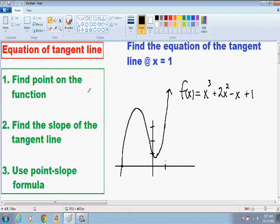Step number one is to find the point on the function. Because it says find the equation of the tangent line at x equals 1, we need to find the point on the function where x equals 1. Basically, since we have our x value at x equals 1, we need to find our corresponding y value. In order to do that, we need to just plug x equals 1 into our function and find our y value.